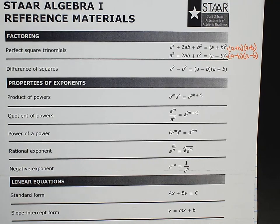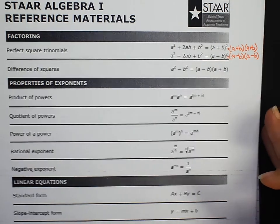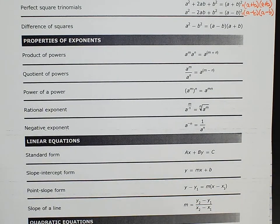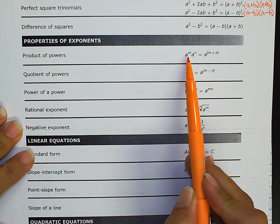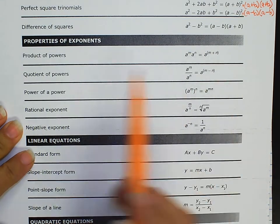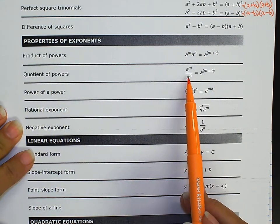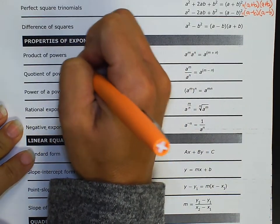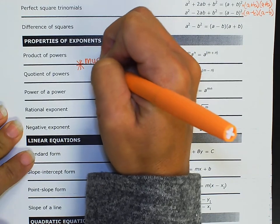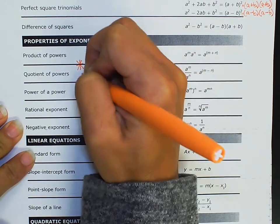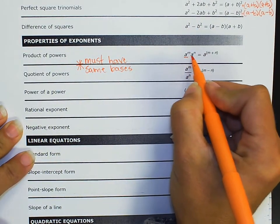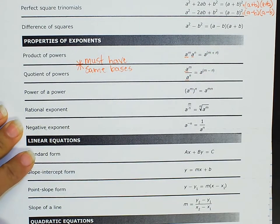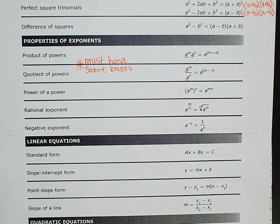Then we go into the laws of exponents, the laws of powers. We did a lot of work with these but it's been a while, so we need some refreshers. We see product of powers — multiplying powers with the same base — and we know we add the exponents. Quotient of powers, or dividing powers with the same base, we subtract the exponents. Something very important: they must have the same bases. We're going to make that note for ourselves — must have same bases.